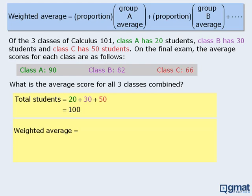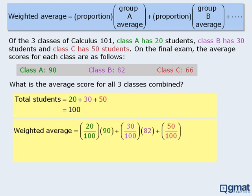To find the average score for all three classes combined, we begin with Class A. Class A has 20 students out of 100 total, so Class A represents 20 one-hundredths of the population, multiplied by the average score of 90. For Class B, 30 of the 100 students are in Class B, so we take 30 one-hundredths multiplied by 82, the average score in Class B. Finally, Class C represents 50 one-hundredths of the population, and the average score in that class is 66. When we simplify all of this, the average score for all three classes combined is 75.6.